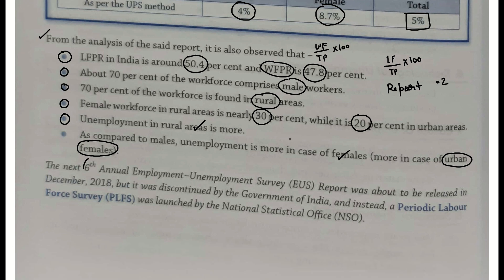Jo next — jo 6th Annual Employment Unemployment Survey tha, report jo thi, woh release hone wali thi December 2018 mein. But sarkar ne isko discontinue kar diya, aur isko replace karke ek naya survey aaya — Periodic Labor Force Survey. Aur ab aap Periodic Labor Force Survey ki upar bhi aankde likhkar aa sakte ho.